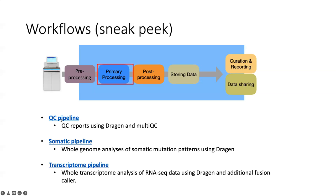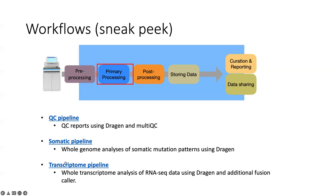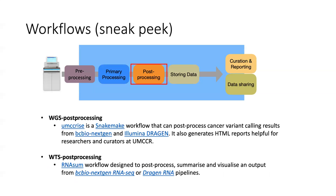These include a QC pipeline for quality control analysis, a somatic pipeline for whole genome analysis of somatic mutation patterns, and a transcriptome pipeline for whole transcriptome analysis of RNA sequencing data. We also post-process primary results to attain secondary analysis results, such as PLOIDY, purity, signatures, HRD detection, mutational consequences, gene expression, fusion, and immune markers, to name a few.